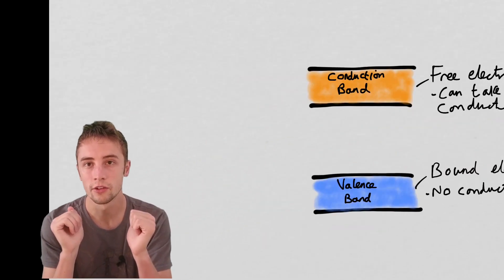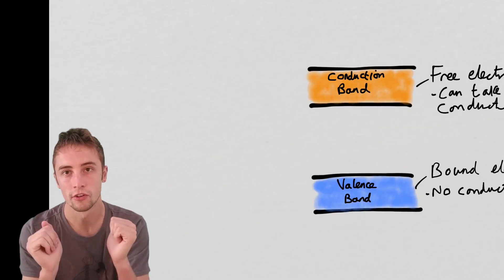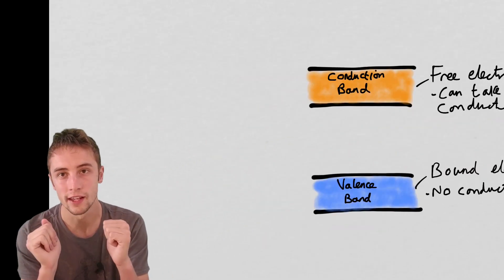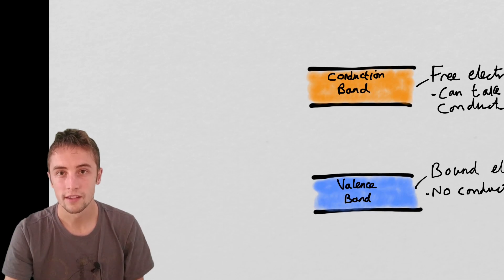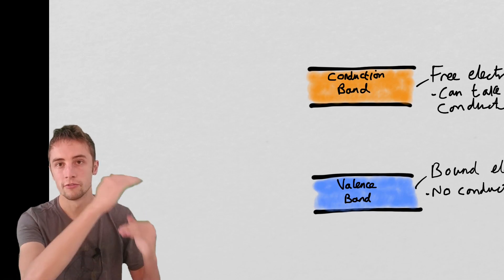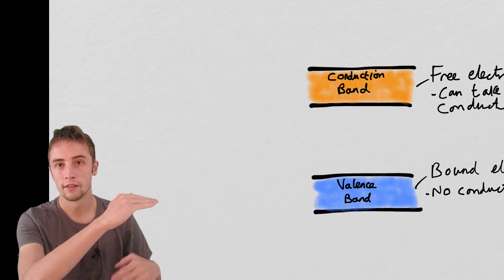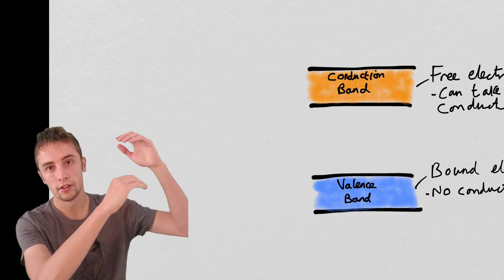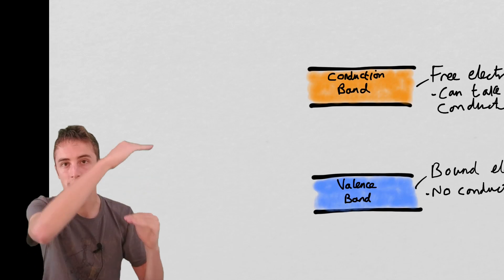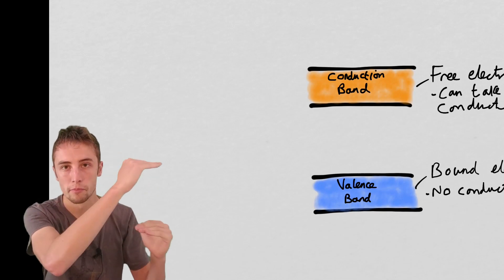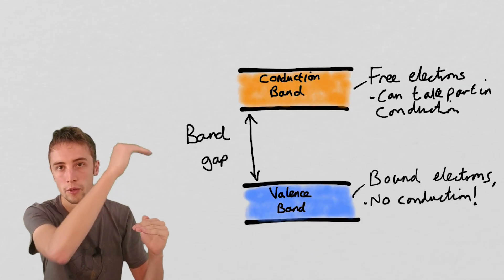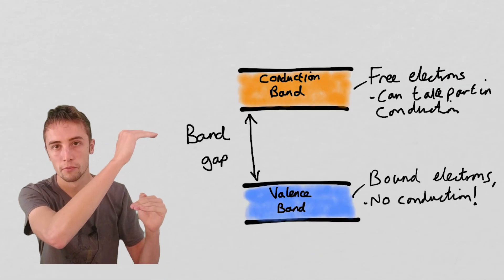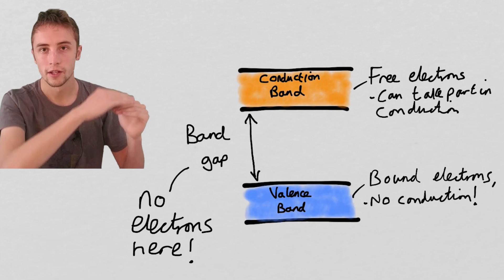Let's look at the band structure of an insulator to start with. In an insulator, you've got the valence band and then you've got the conduction band, and they are separated by a large band gap — the valence band at the bottom, the conduction band at the top.